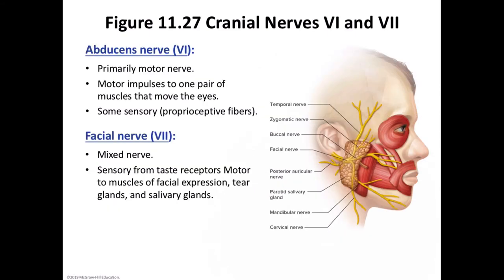Cranial nerve number six is the abducens nerve — the sixth pair. They are small, originate from the pons near the medulla oblongata, enter the orbits of the eye, and supply motor impulses to the remaining pair of external eye muscles. This nerve is motor with some proprioceptive fibers.